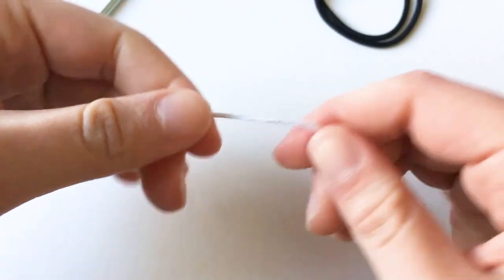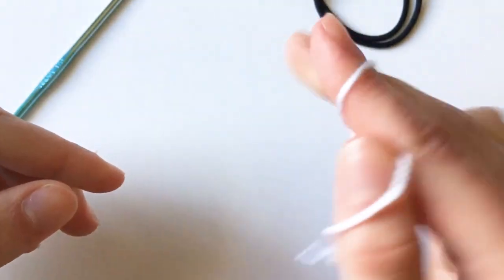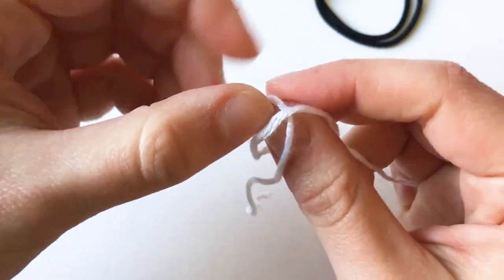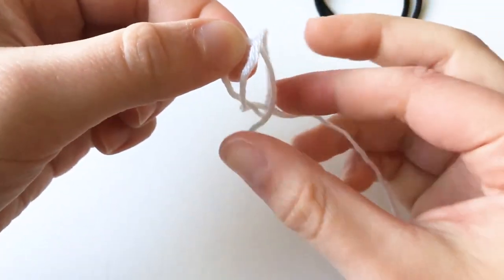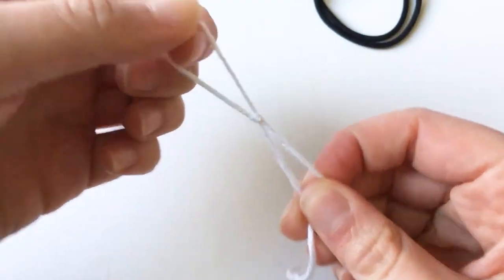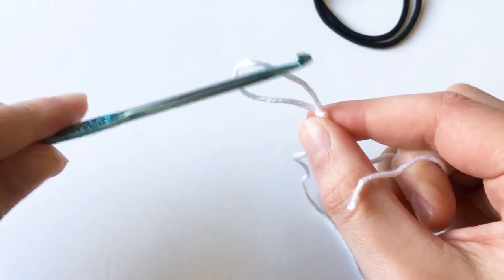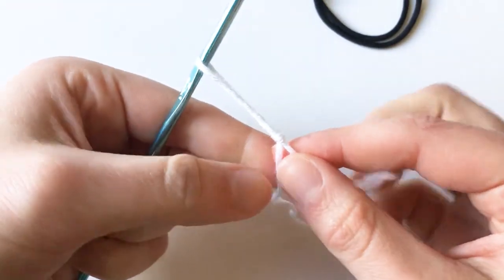To begin, make a slip knot. Take the tail of the yarn, wrap it around your finger so you create an X, and then pull the tail through that loop but not all the way. You just want to create a loop like that. Insert your hook into the loop and then pull on the tail to make the loop smaller.